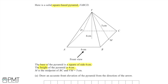M is the midpoint of BC, and VM equals 5cm. So this is BC, and then VM, the line, is going to be equal to 5cm, and M is this midpoint on BC.